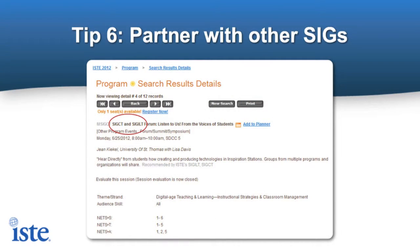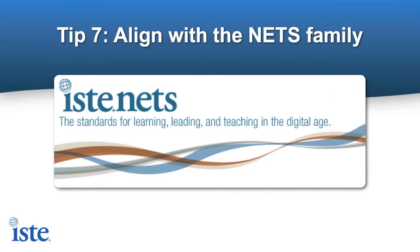Think about potential collaboration opportunities with other SIGs that could elevate the discussion around your content choice. By partnering with another SIG, each group could explore different angles around the same topic. Identify possibilities for aligning your event content to the ISTE nets. This will provide additional benefits and increase the ease of application for the attendees.